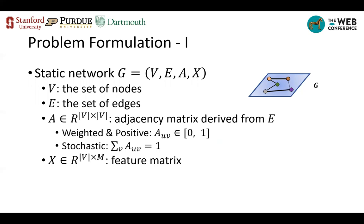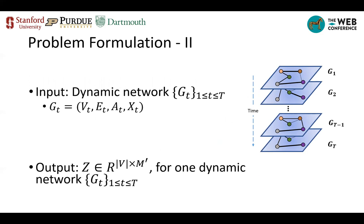We start by defining the static network G equal to V, E, A, N, X. V is the set of nodes, E is the set of edges, and the adjacency matrix A is derived from E with three properties: weighted and positive (each element between 0 and 1), stochastic (each row sums to 1), and feature matrix X where each row maps features for one node. Generalizing to a dynamic network is trivial — we index static networks by timestamp T, so each static network is one snapshot. The output is one embedding per person summarizing their behaviors throughout the whole interaction event, used for downstream inference of social characteristics.